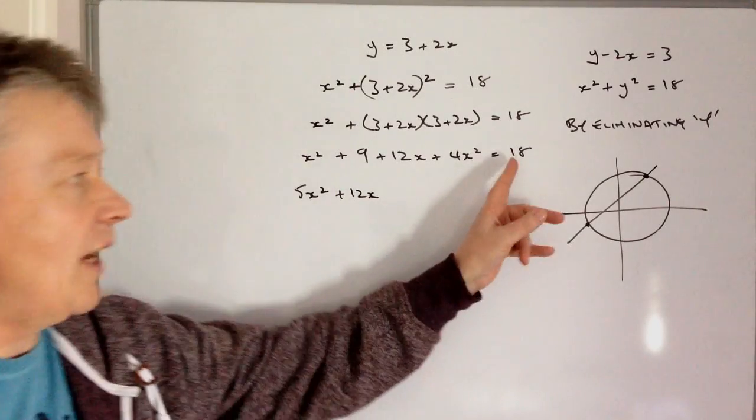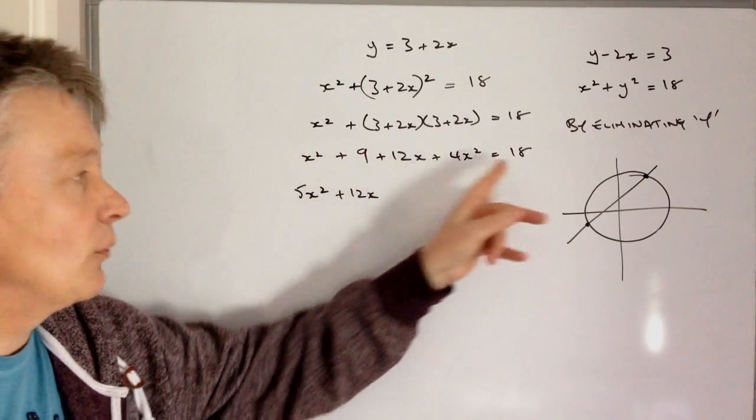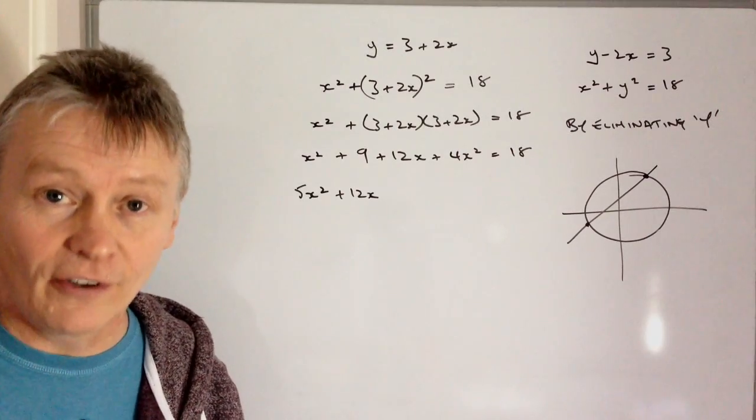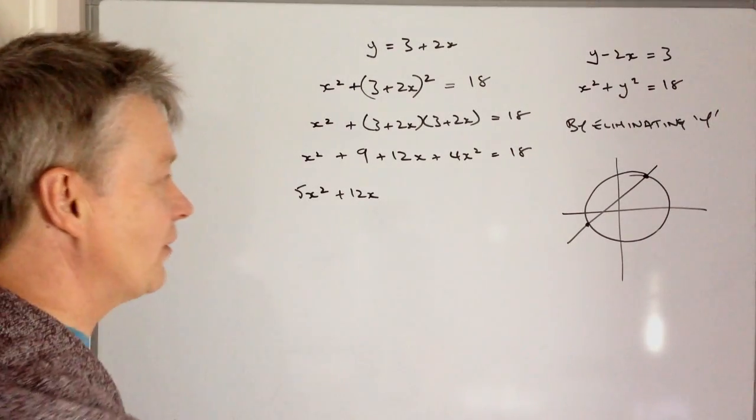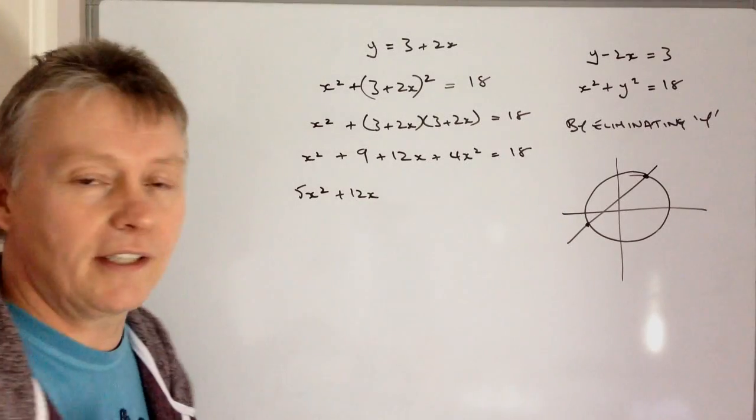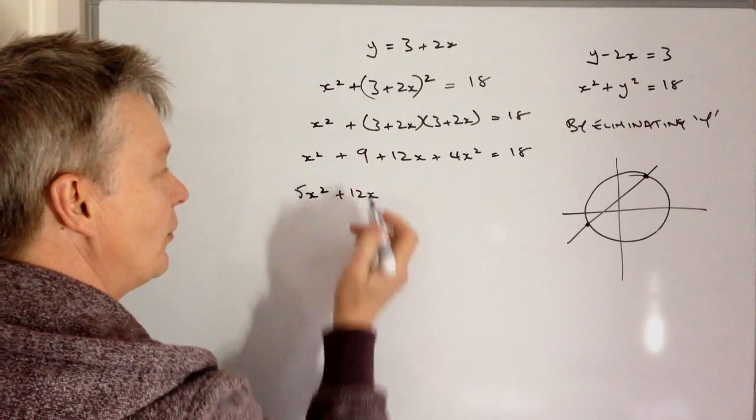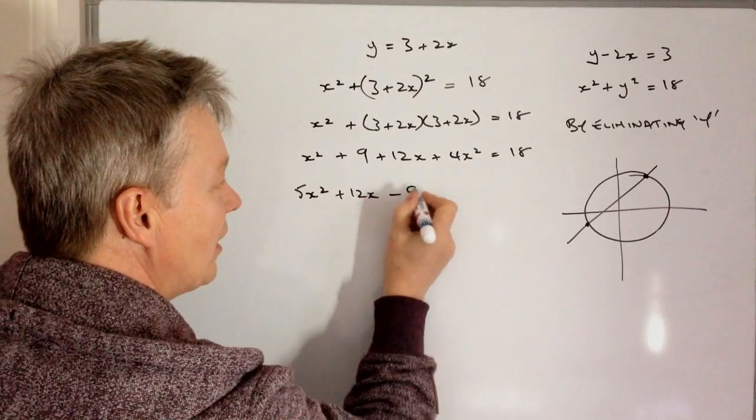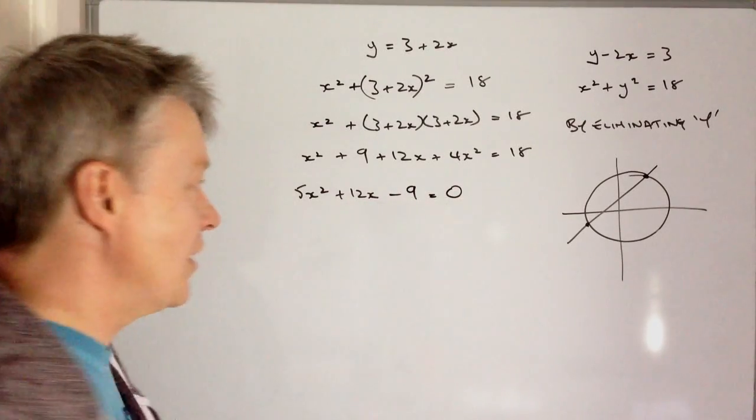Now I've also got 18 over here and 9 here. Well, I need this to equal 0 in order to factorize it. So I'm going to bring this 18 over. I'm going to minus 18 from both sides and end up with 9 minus 18, which is minus 9, and that equals 0.